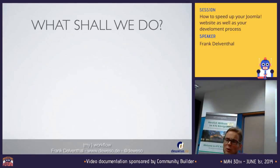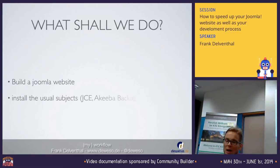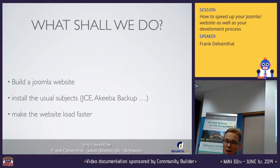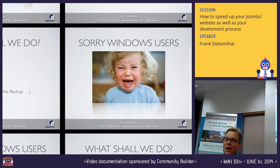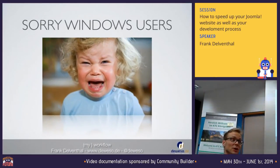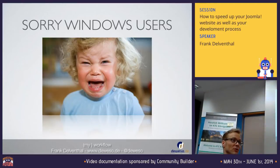So basically, what shall we do? Build some Joomla website. Install the usual suspects — JCE, Akeeba Backup, whatever you prefer — and also make the website load a little faster. I'm sorry for Windows users; this is majorly about my Mac development workflow, but some of the tools can also be used for Windows, and I can also name some alternatives for Windows users.